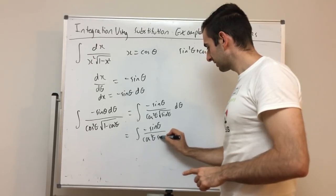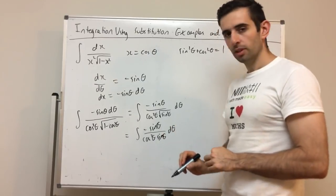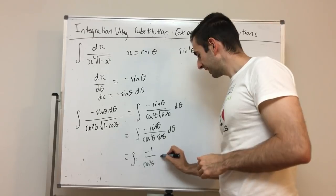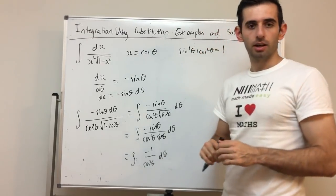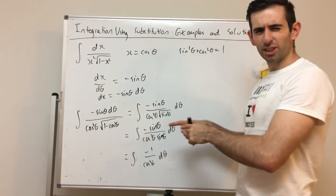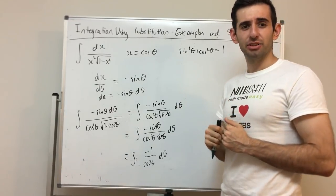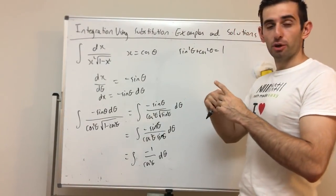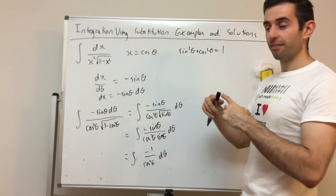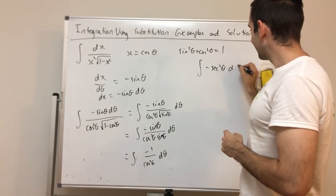We now have the integral of cos²θ · sin θ · (−sin θ) dθ, which simplifies to −cos²θ · sin²θ... actually, the sine terms cancel differently — we're left with the integral of −1/cos²θ dθ. Trig functions in the denominator are hard to integrate, but using the reciprocal identity: 1/cos θ = sec θ, so this becomes the integral of −sec²θ dθ.